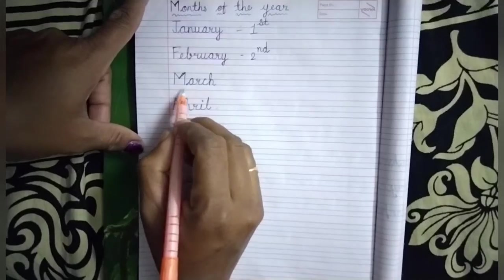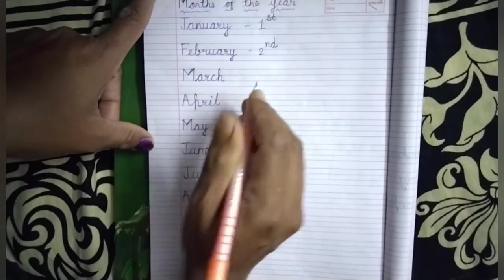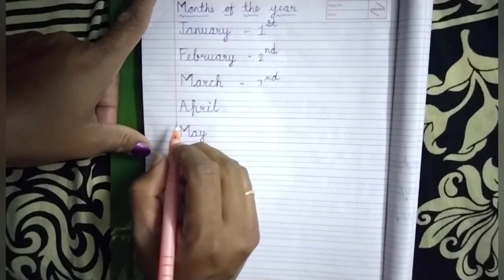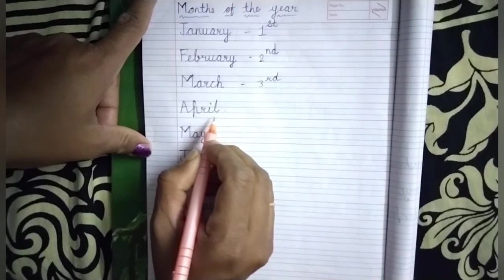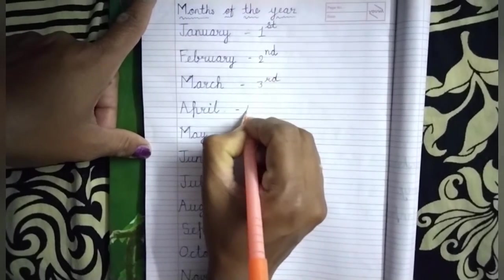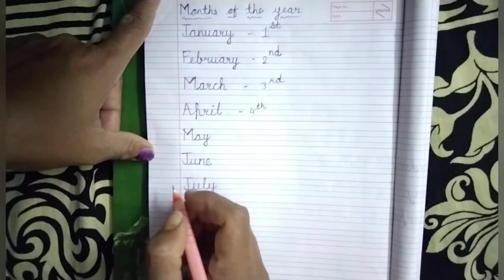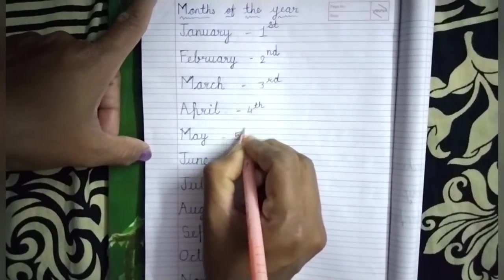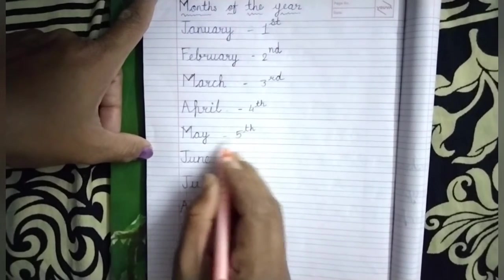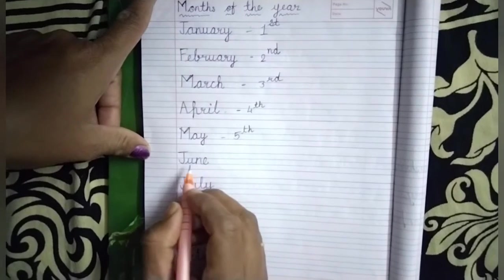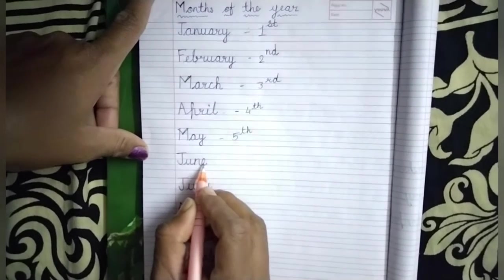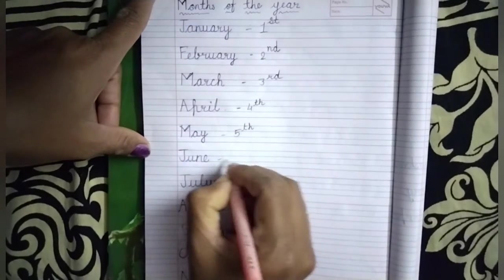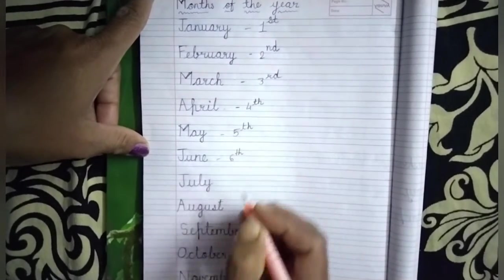The next month is M-A-R-C-H, March. And March is our third month of the year. The next is A-P-R-I-L, April. And April is our fourth month of the year. Then M-A-Y, May. May is our fifth month of the year. Then J-U-N-E, June. And June is our sixth month of the year.